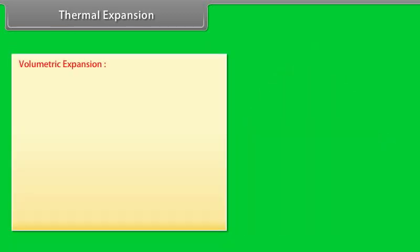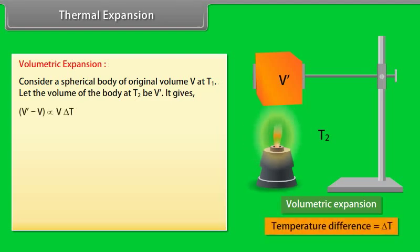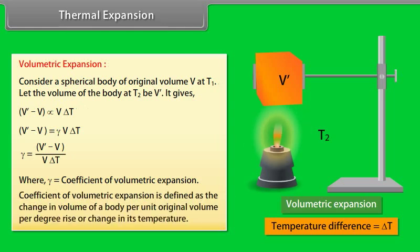Volumetric expansion: Consider a spherical body of original volume V at temperature T1. Let the volume of the body at temperature T2 be V'. It gives V' − V = γV·ΔT. The value of gamma is equal to (V' − V)/(V·ΔT), where gamma is the coefficient of volumetric expansion, defined as the change in volume of a body per unit original volume per degree rise or change in temperature.